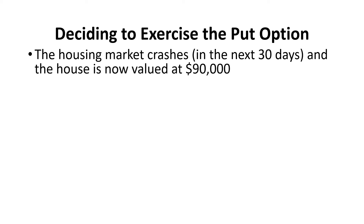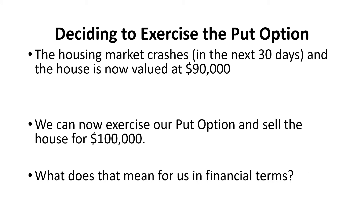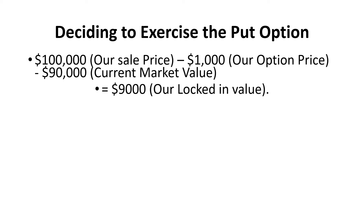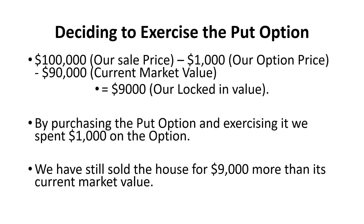Let's assume you decide to exercise the put option. The housing market crashes in the next 30 days and the house is now valued at $90,000. We can now exercise our put option and sell this house for $100,000. In financial terms: our sale price is $100,000, minus the $1,000 we paid for the option, minus the $90,000 current market value, leaves us with $9,000 locked in value. By purchasing and exercising the put option, we spent $1,000 on the option but still sold the house for $9,000 more than its current market value.